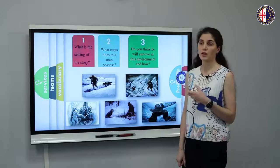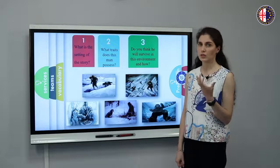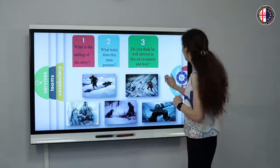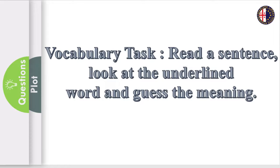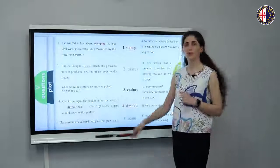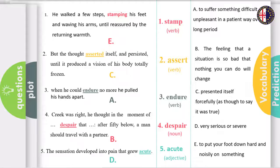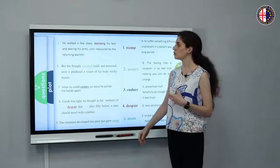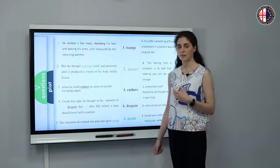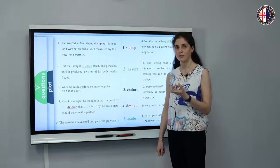Whether his efforts are successful or not, we do not know yet. Now, before we start talking about the plot of the story, I would like you to practice the vocabulary a bit. As you can see on this slide, we have three columns. On the first column you have the sentences taken out from the story. In the middle column we have the words that you need to define, and in the third column we have the definitions already. In order to find the meanings, you need to look at the example sentences because they give you a good context and the meaning.